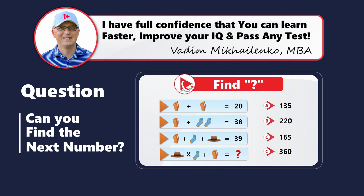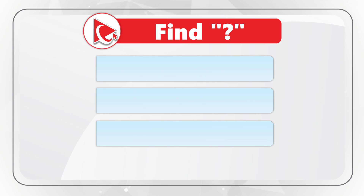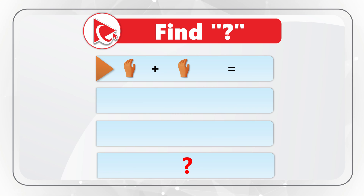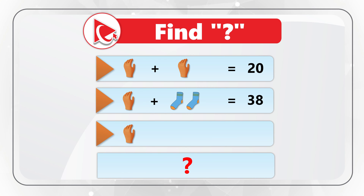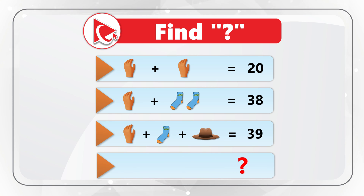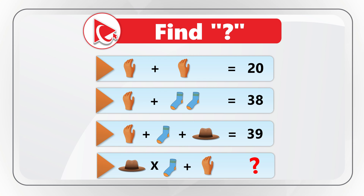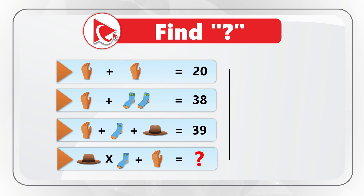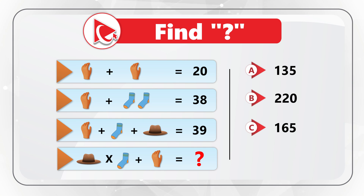Here's one of my favorite questions testing your mental skills and attention to detail. You're presented with a series of equations to calculate the missing number. The first equation: glove plus glove equals 20. Second: glove plus two socks equals 38. Third: glove plus sock plus hat equals 39. The final equation with the missing number: one hat multiplied by one sock plus one glove. Select from four choices: A=135, B=220, C=165, D=360.